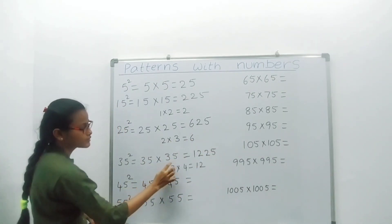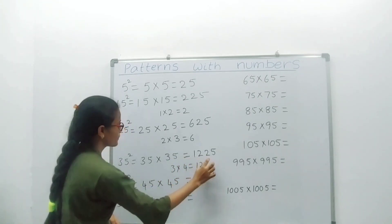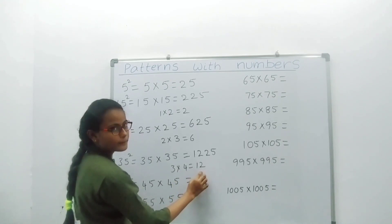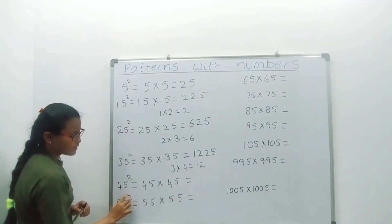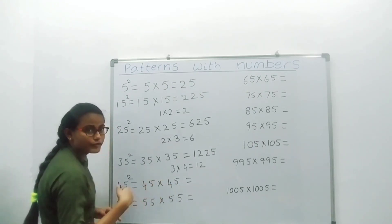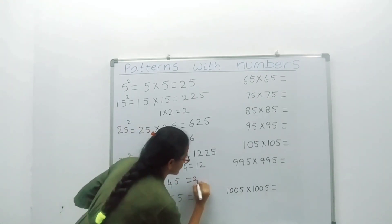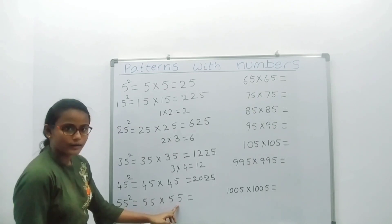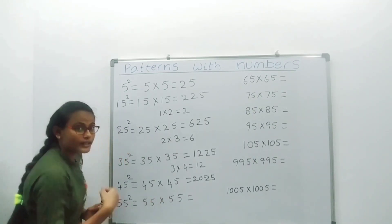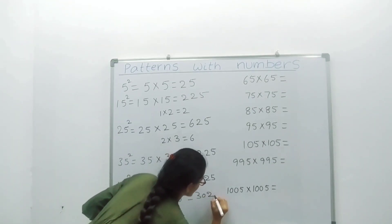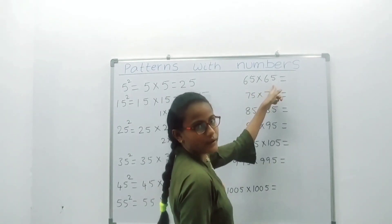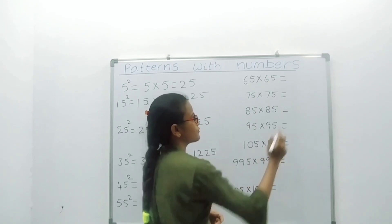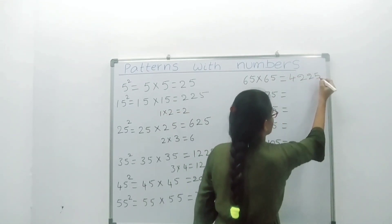35 squared: 35 into 35 equals 1225. Close the number 5; we have 3. The next number after 3 is 4. 3 into 4 equals 12, then write down 25 — answer is 1225. 45 squared: 45 into 45. Close the number 5; we have 4. The next number after 4 is 5. 4 into 5 equals 20. Write down 25 — answer is 2025. 55 squared: 55 into 55. Close the number 5; we have 5. The next number after 5 is 6. 5 into 6 equals 30. Write down 25 — answer is 3025. 65 squared: 65 into 65. Close the number 5; we have 6. The next number after 6 is 7. 6 into 7 equals 42. Write down 25 — answer is 4225.